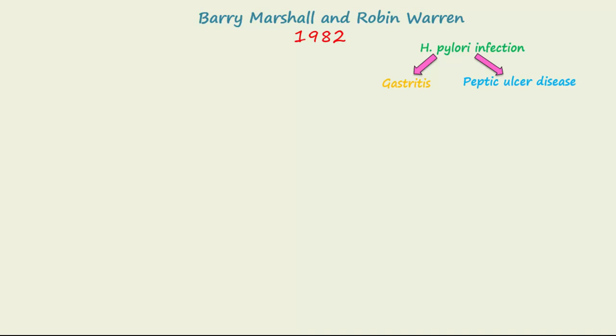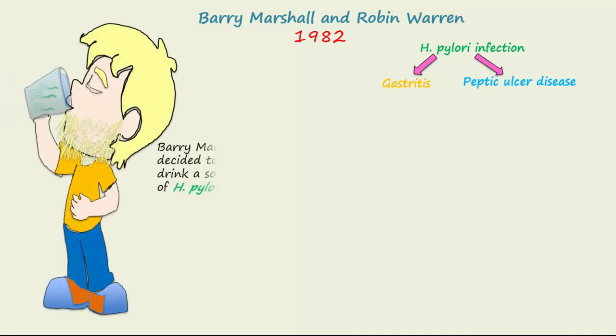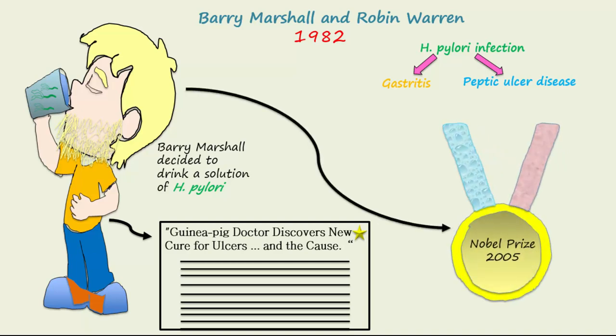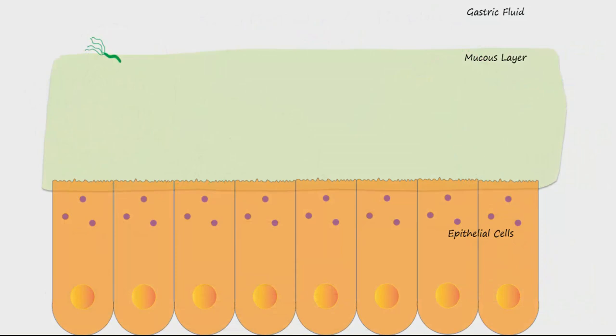During their early research efforts, Barry Marshall, becoming frustrated with the negative response to his work, decided to drink a solution of H. pylori to prove his point. He became quite ill and the press got a hold of the incident and printed a newspaper story entitled 'Guinea Pig Doctor Discovers New Cure for Ulcers and the Cause.' Later in 2005, Marshall and Warren received the Nobel Prize in medicine for their pioneer work in discovering the true cause of ulcers.